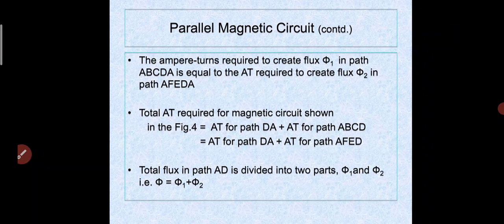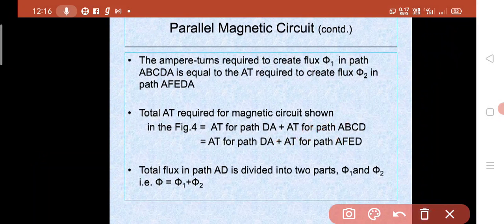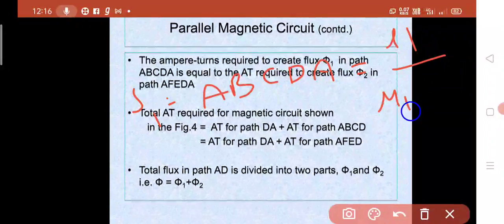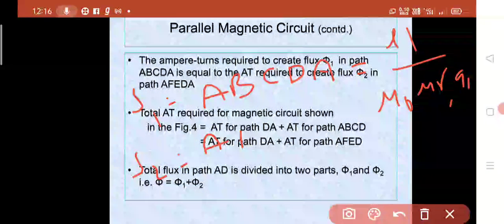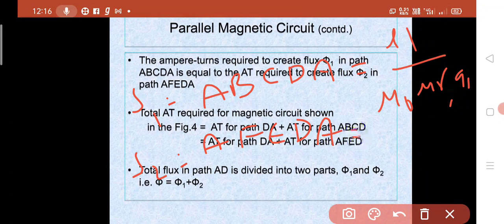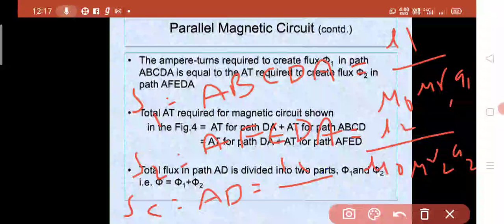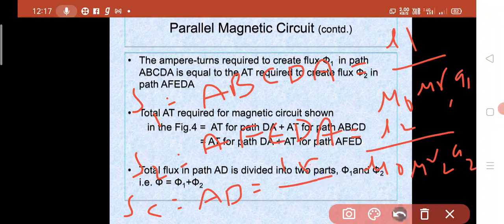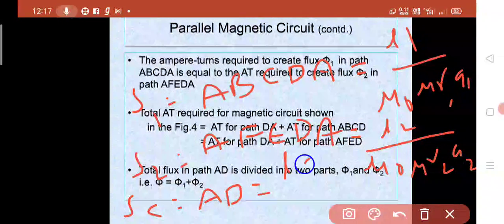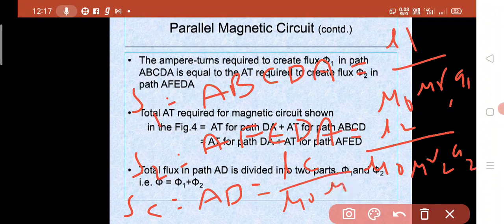S1 is the reluctance of path ABCDA, equal to L1/(μ₀ μr1 A1). S2 is the reluctance of path AFEDA, equal to L2/(μ₀ μr2 A2). SC is the reluctance of the central limb, equal to LC/(μ₀ μrc Ac).